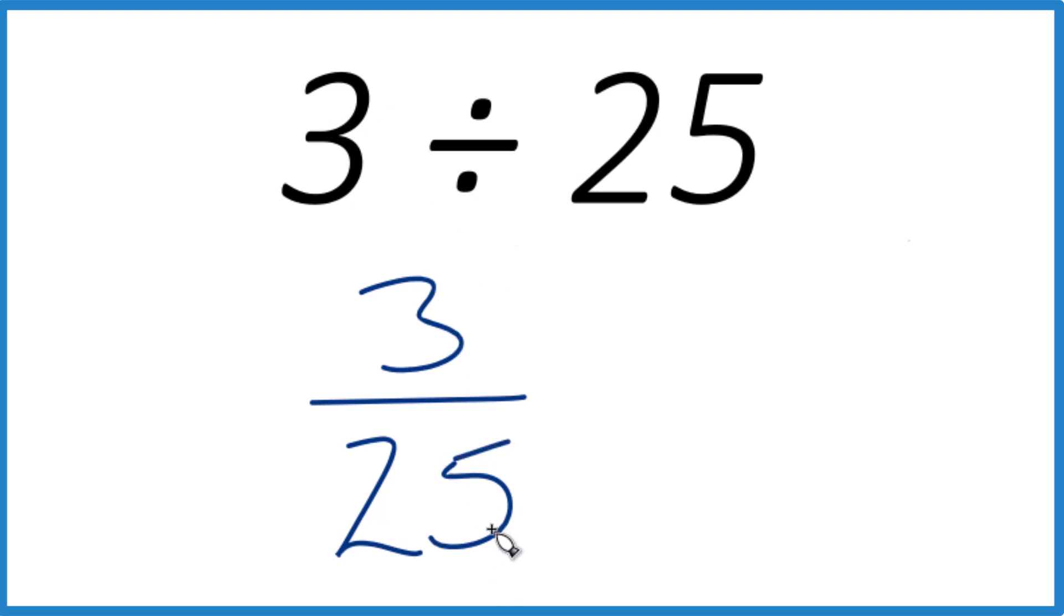Because we want to know how many times 25 goes into 3. And since 3 is smaller, we know it's going to be less than 1. It's going to be a decimal. So let's do this.